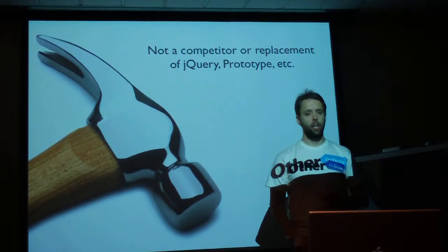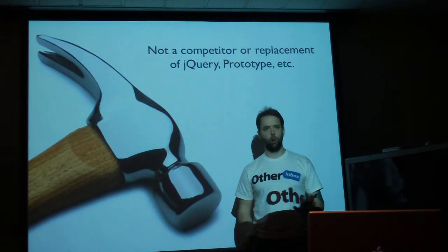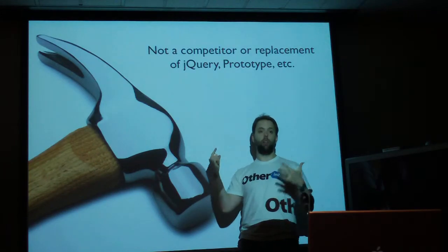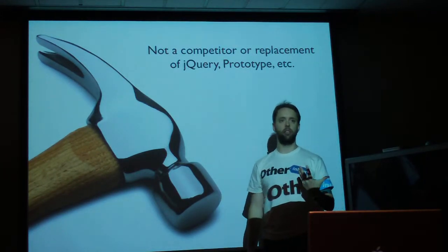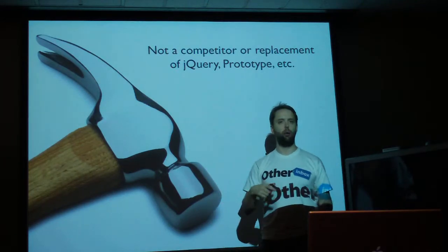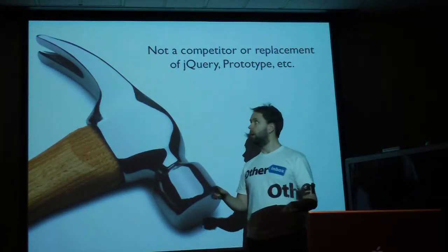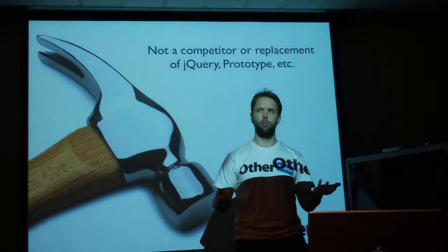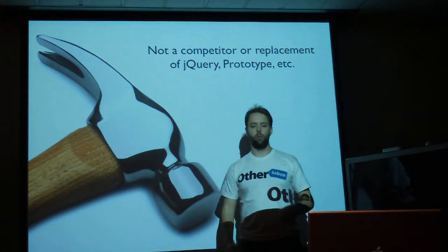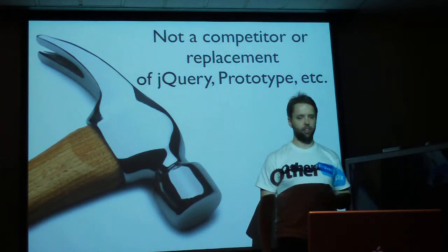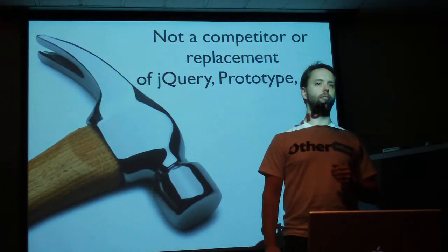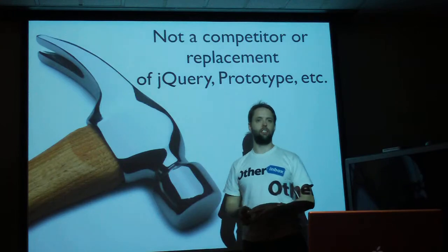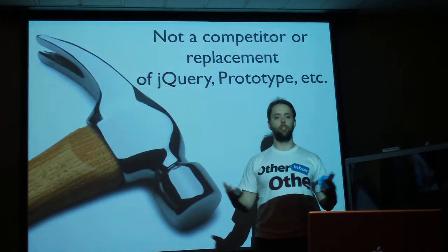This is a really common point of confusion: SproutCore is not a competitor or replacement for jQuery, Prototype, or any other library. In fact, the current version uses Prototype for something, but the new version will be completely independent of any library. If you're looking for a comparison point, this would be more like OpenLaszlo or Cappuccino. You could use one of those other libraries to make your own framework that works like this — maybe that's the best way to explain it.